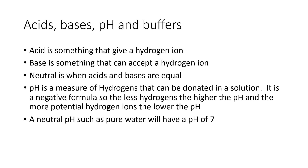An acid, in short, is something that gives you a hydrogen ion. Most acids have 'hydro' in the name — for example, hydrochloric acid is made of hydrogen and chloride. A base tends to accept a hydrogen ion, and many bases have hydroxide groups.